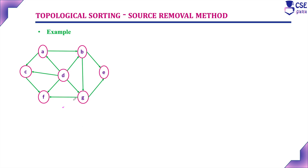First step: identify the vertex with in-degree 0. Vertex A has in-degree 1, B has in-degree 2, C has in-degree 2, D has no in-degree — so in-degree 0. F has in-degree 3, G has in-degree 2, and E also has in-degree 2. So the only vertex with in-degree 0 is vertex D. First step: node with in-degree 0 is D.